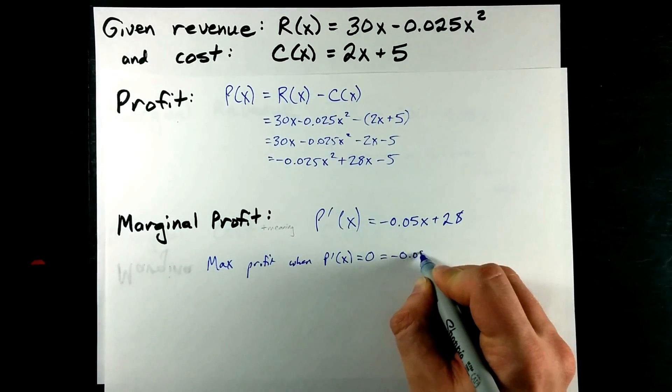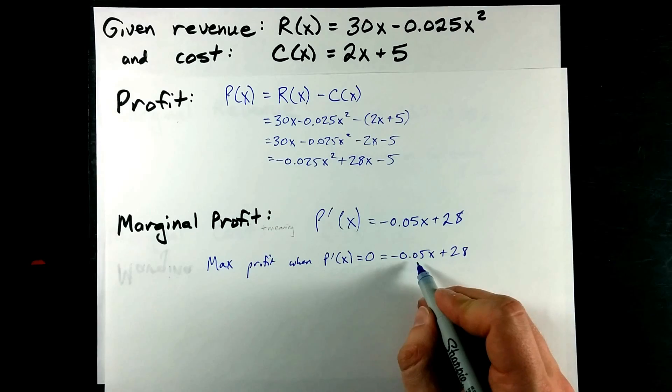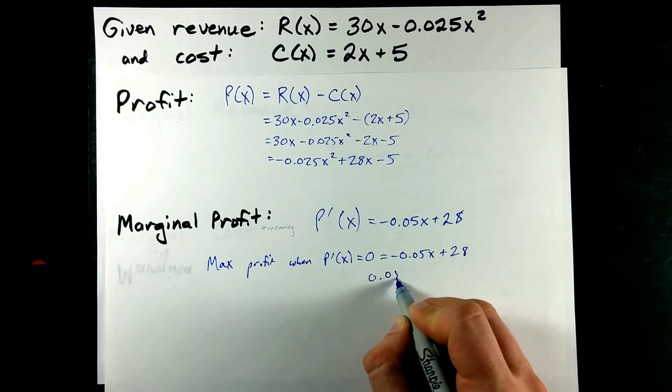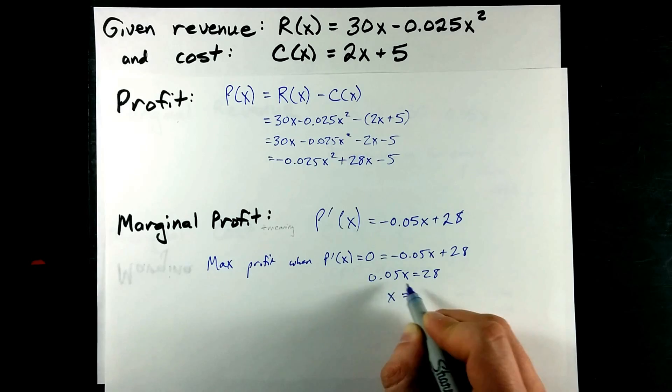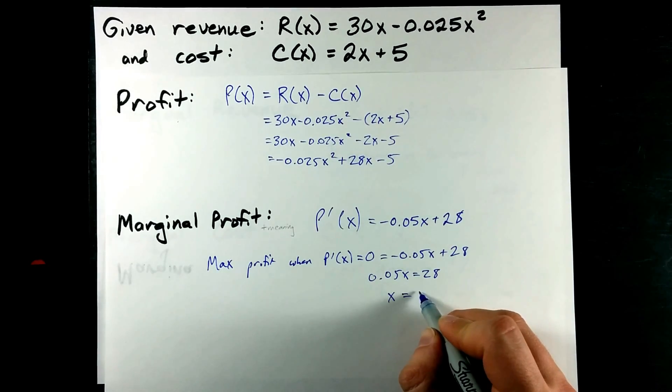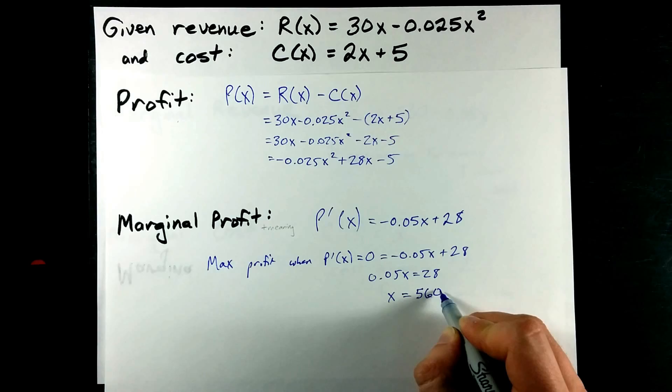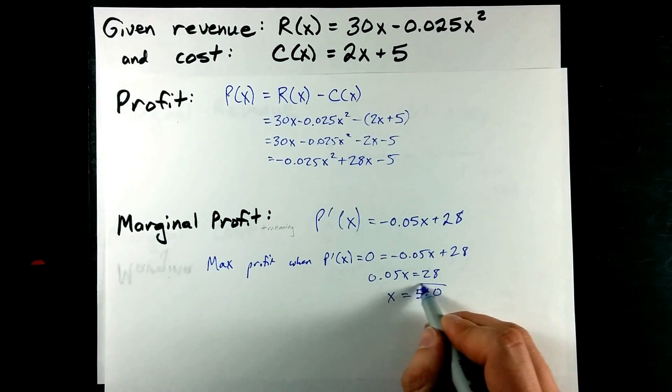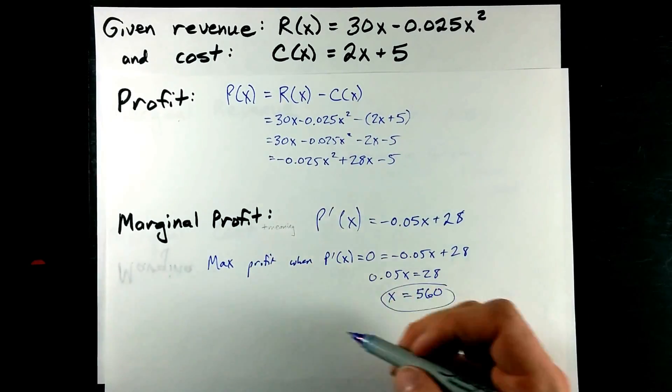That's super easy in this case. I'm going to follow this through because I think it's an interesting exercise. I'm going to move this to the other side, equals 28. And when I divide both sides by 0.05, I believe I get 560.